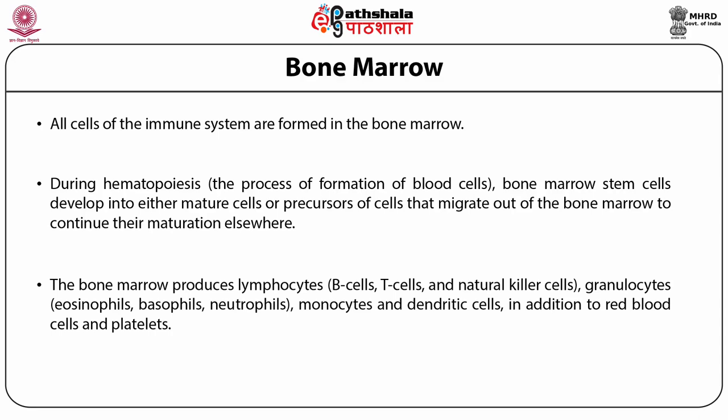The bone marrow produces lymphocytes — B cells, T cells, NK cells — granulocytes including eosinophils, basophils, neutrophils, monocytes, and dendritic cells, in addition to RBCs and platelets.